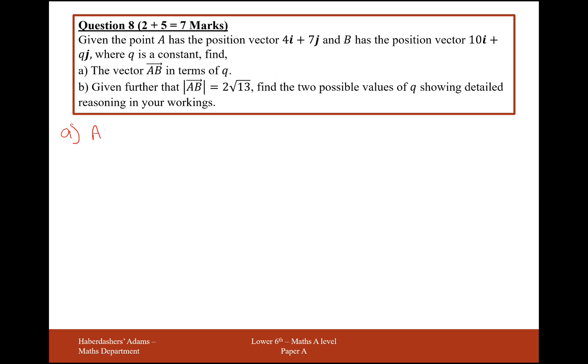Part A asks us to find the vector from A to B in terms of q. Finding vectors from one position to another is really easy. All you have to do is, if we're working from A to B, you work out position B and then take away position A. That's the little trick to this question here.